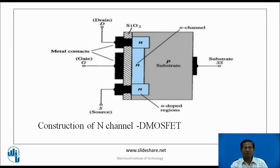This is the construction diagram of N-channel D MOSFET. It is a lightly doped P-type semiconductor material in which two heavily doped N regions are diffused, represented as source and drain. In between the two heavily doped N regions there is a connectivity made up of N-type material — that's why the name is N-channel depletion type MOSFET. The gate terminal is isolated from the channel by a thin layer of SiO2, which is why the input impedance is high.